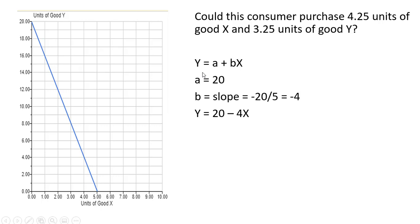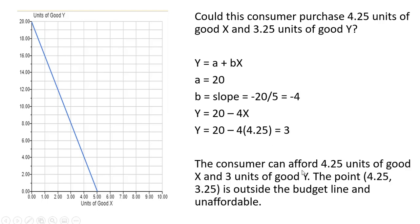Plugging everything into our equation, Y = 20 - 4X. Evaluating at 4.25 units of good X, Y equals 3. Therefore, the consumer can afford 4.25 units of good X and only 3 units of good Y. The point (4.25, 3.25) is outside the budget line and unaffordable. That's it.